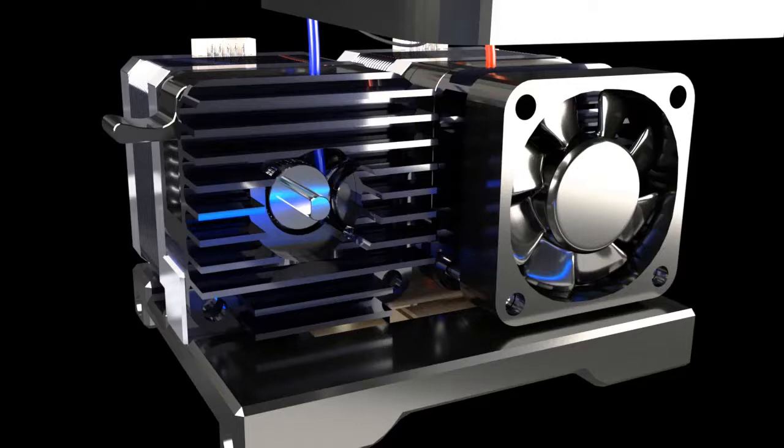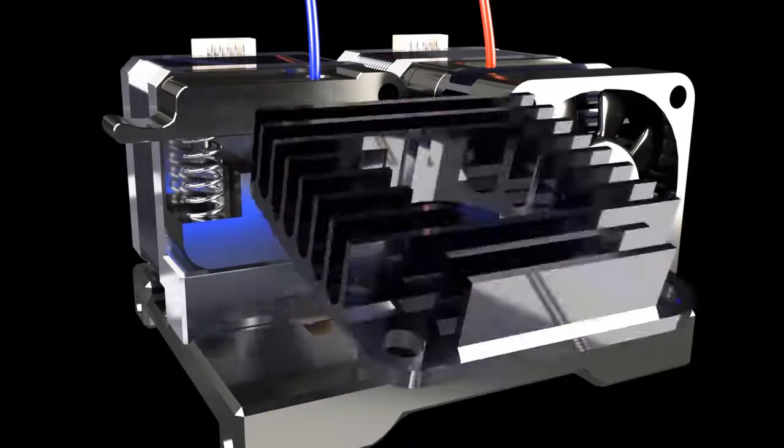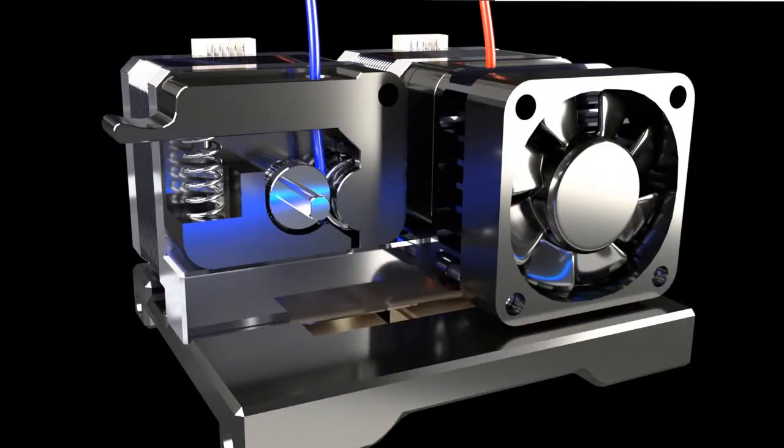By also removing the cooling unit we can reveal the stepper motor which drives the filament forward as the printing process takes place. The filament is protected from getting heated too early by entering a teflon tube first, which then contacts directly with the heated nozzle.